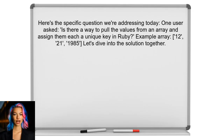Here's the specific question we're addressing today. One user asked: is there a way to pull the values from an array and assign them each a unique key in Ruby? They provided an example array and wanted to convert it into a hash format. Sound familiar? Let's dive into the solution together.